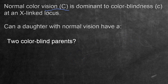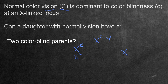What about two colorblind parents? The father would be little c with a Y chromosome. The mother, being colorblind, has to be homozygous recessive with two little c's. The daughter with normal vision would need at least one dominant big C, but neither parent can provide a dominant allele. So it is not possible for a daughter with normal vision to have two colorblind parents — all daughters would be colorblind as well.